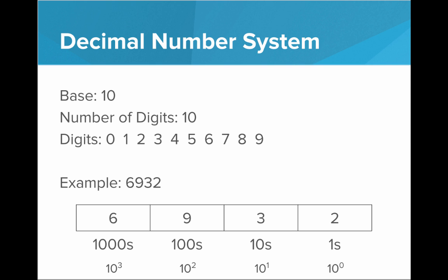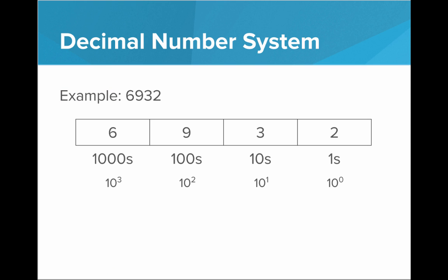So this is where we get the phrase base 10 from. The base of all of these exponents is 10. So to get the number from this string of digits, all we have to do is look at how many groups of each of these places we have. We have 6 groups of 1000, 9 groups of 100, 3 groups of 10, and 2 groups of 1. We have 6,900, a 30, and a 2. When we put that all together, we have 6,932. So that's how the decimal system is working.